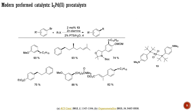As starting materials, researchers have used aryl bromides and alkyl halides. Organozinc reagents were formed from the reaction of alkyl halides with metallic zinc in the micelles. The typical catalyst loading for the reaction was 2 mole percent, but in some instances it could be reduced further.